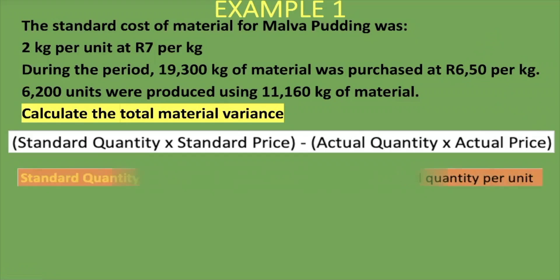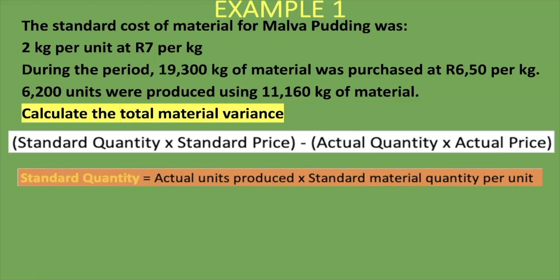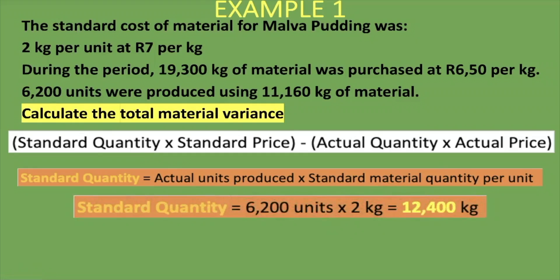We still need the standard quantity. The formula for standard quantity is: actual units produced times standard material quantity per unit. We produced 6,200 units, and we anticipated to use 2 kg per unit — that is our standard material quantity per unit. So we take 6,200 times 2 kg per unit, which gives us 12,400 kg. Now we have our standard quantity.